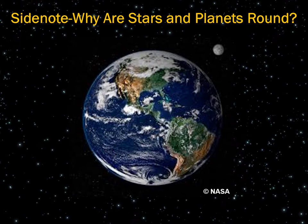In other words, the Earth is round, all the planets in the solar system are round, and stars in the known universe are round as well.